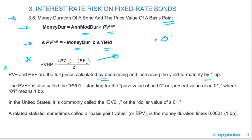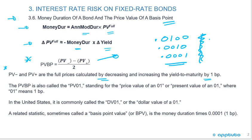Remember, 100 basis points is 1%, which is 0.01. Therefore, 10 basis points would be 0.001, and one basis point would be 0.0001. I've seen a lot of candidates in practice classes make mistakes with their keystrokes regarding the number of decimals.